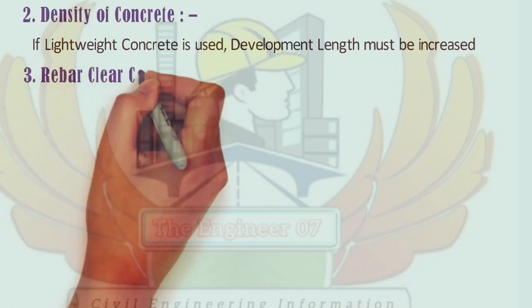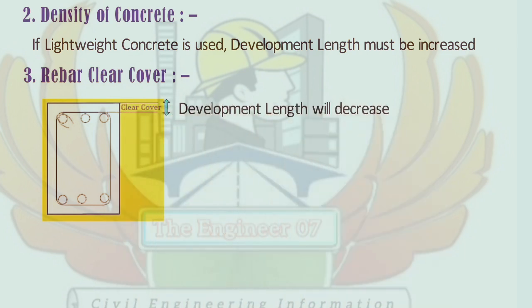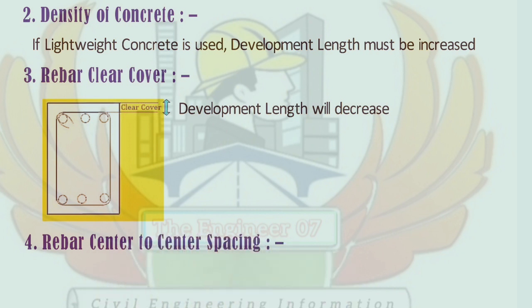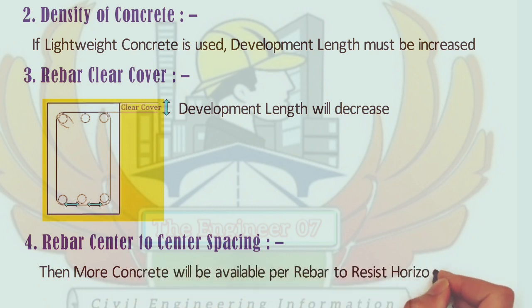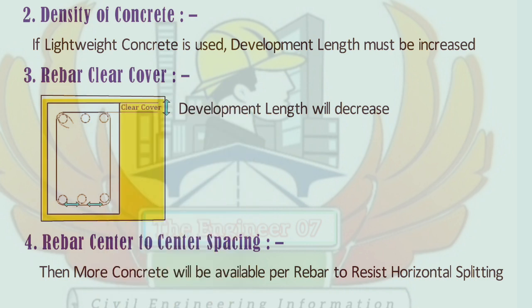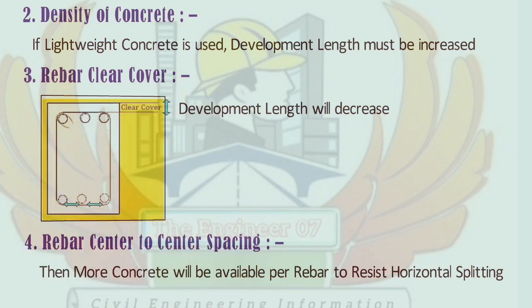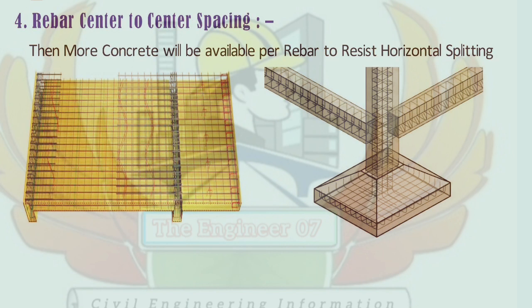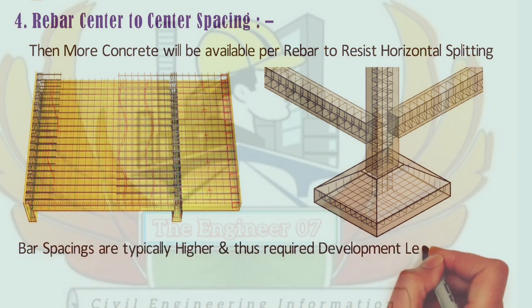Factor 3: Rebar clear cover. If we increase the concrete cover, then the development length will decrease. Factor 4: Rebar center-to-center spacing. If the rebar spacing is increased, more concrete will be available for the rebar to resist horizontal splitting. In beams, bars are typically spaced about one or two bar diameters apart. For slabs, footings, and certain other member types, bar spacings are typically higher and thus the required development length is less.